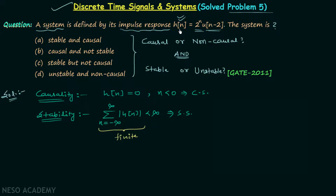Moving on to the question, h[n] is equal to 2^n multiplied by u[n-2]. We will first find out whether the system is causal or non-causal, and for this purpose we will check the causality condition by focusing on u[n-2].